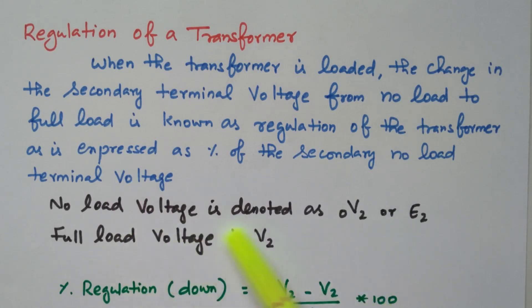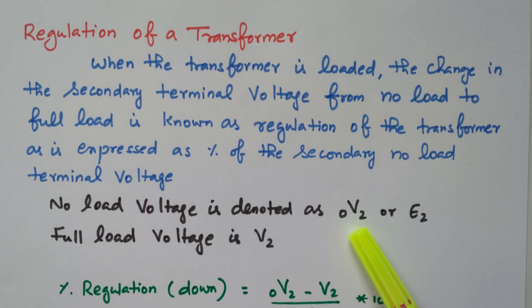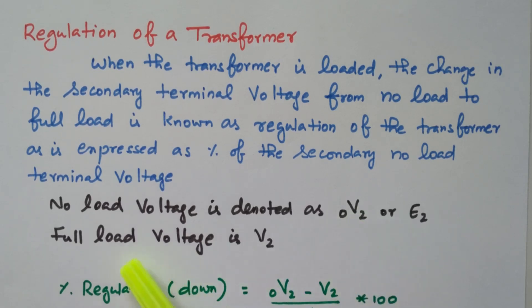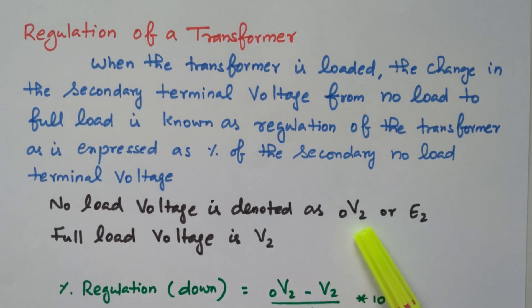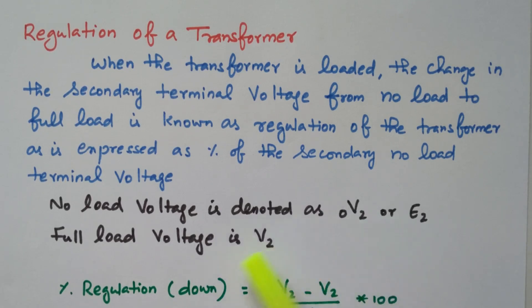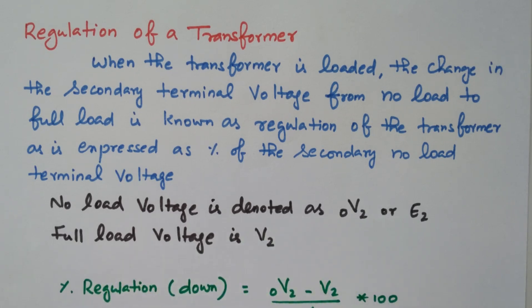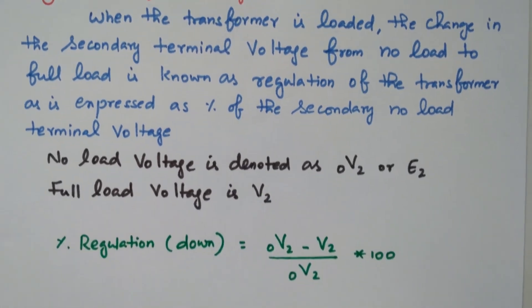This no-load voltage is denoted by V2 with suffix 0, where the 0 refers to no load. The full-load voltage is simply V2. So V2-suffix-0 is the no-load voltage and V2 is the full-load voltage. The difference between these two is nothing but the regulation.